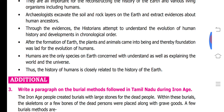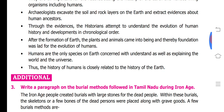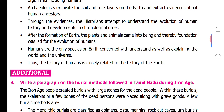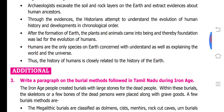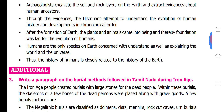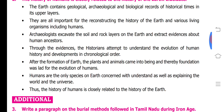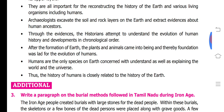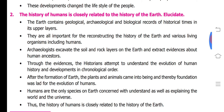Humans are the only species on the earth concerned with understanding as well as explaining the world and the universe. Among all organisms, humans are the only ones able to understand and explain. This is about how the history of humans is closely related to the history of the earth — from the evolution of the earth, the evolution of humans started.